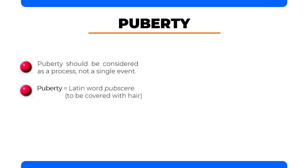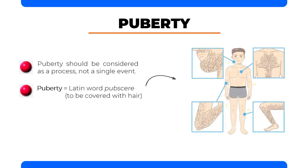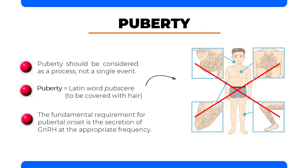The word puberty originated from the Latin word 'pubescere,' meaning to be covered with hair. The original definition relating to hair in certain anatomical regions obviously does not apply to other animals. The fundamental requirement for pubertal onset is the secretion of GNRH at appropriate frequency and quantities to stimulate gonadotropin release by the anterior pituitary lobe.